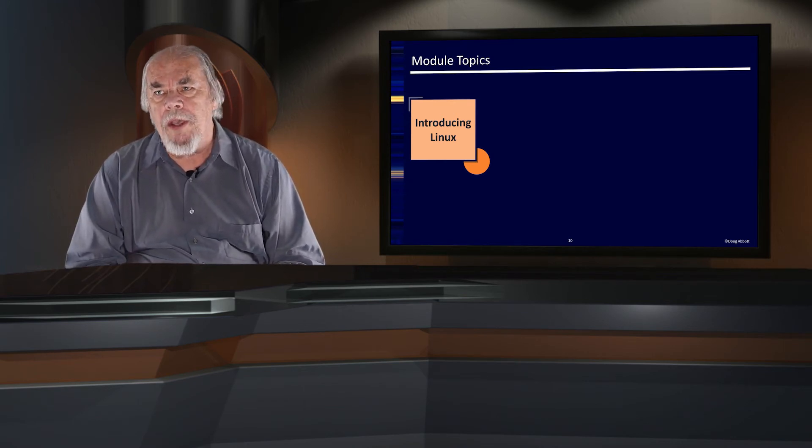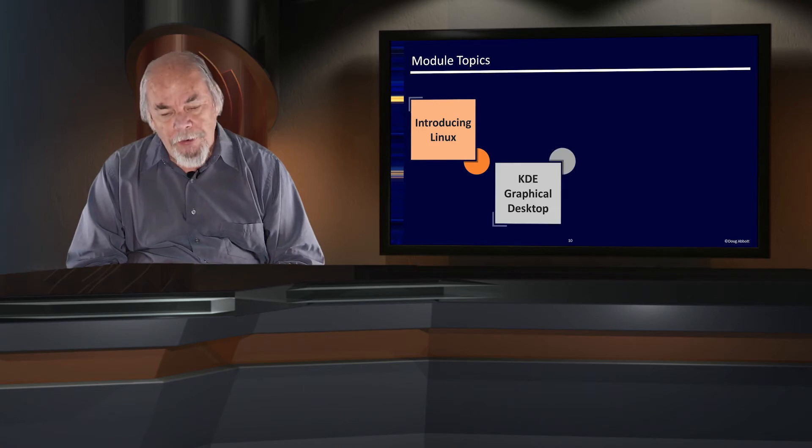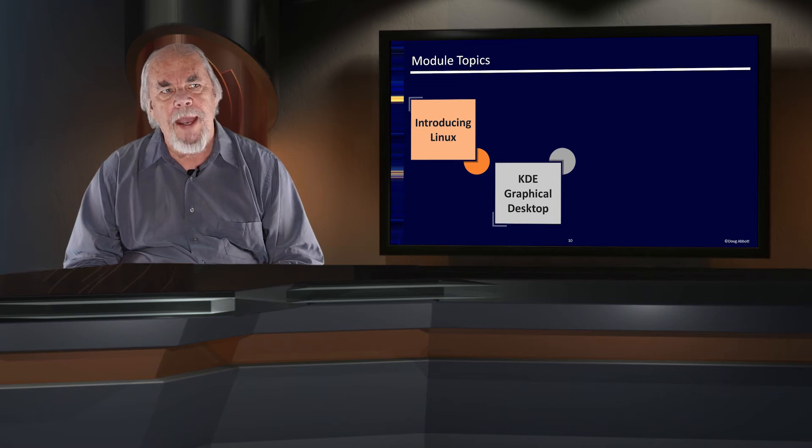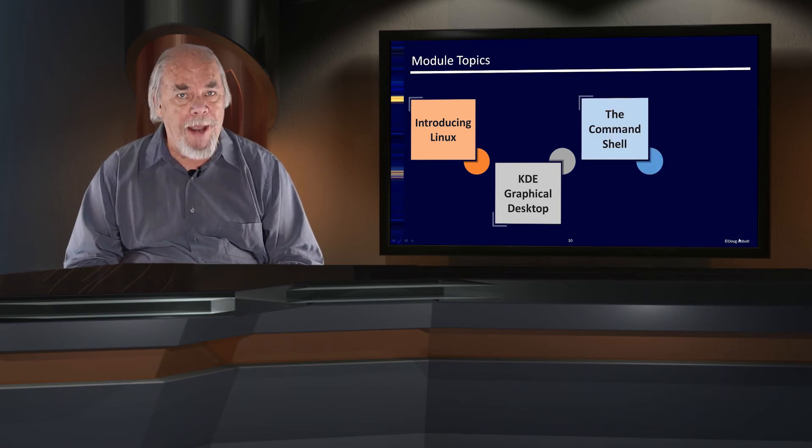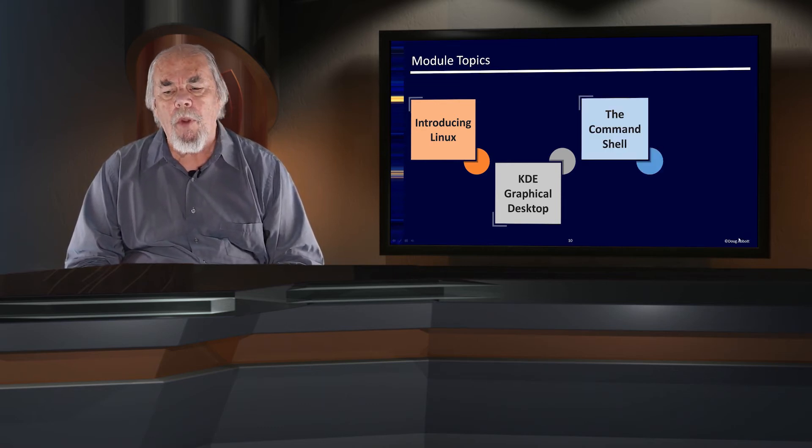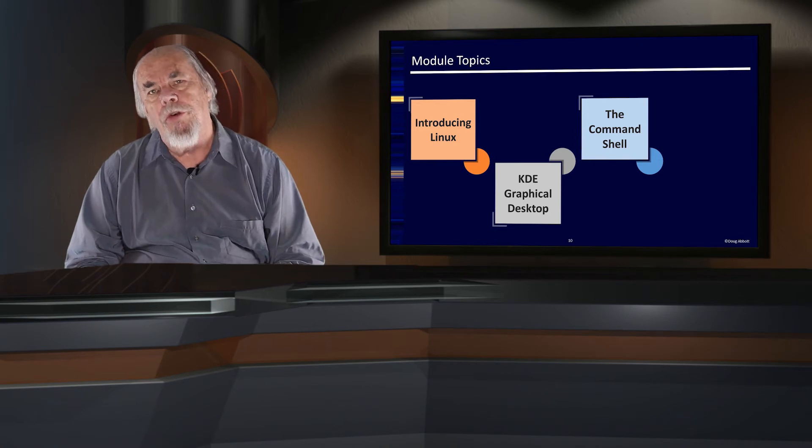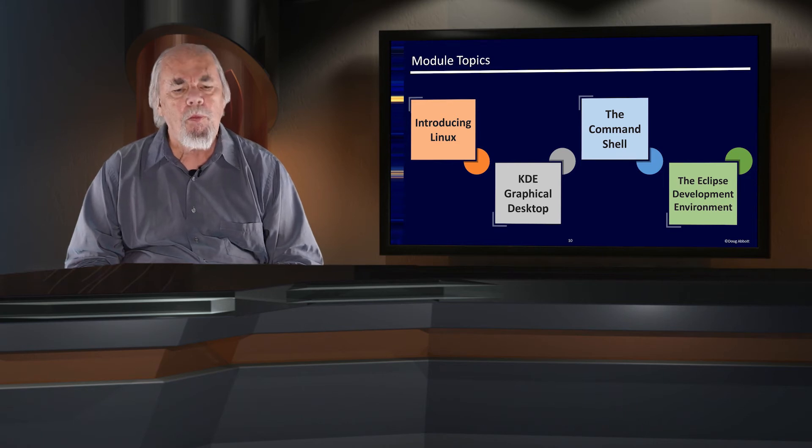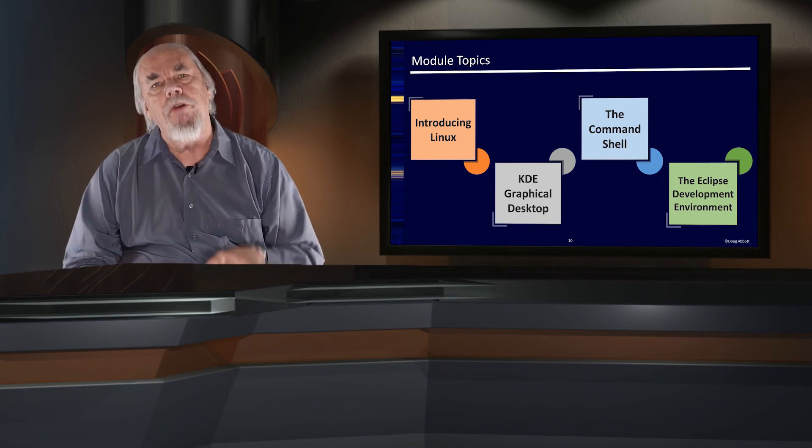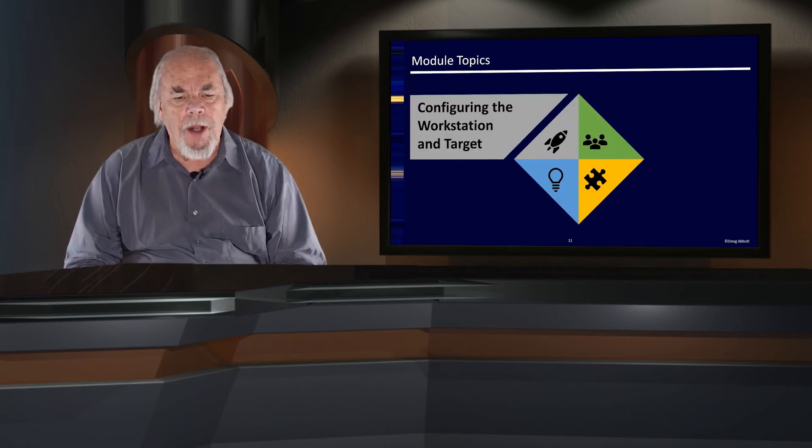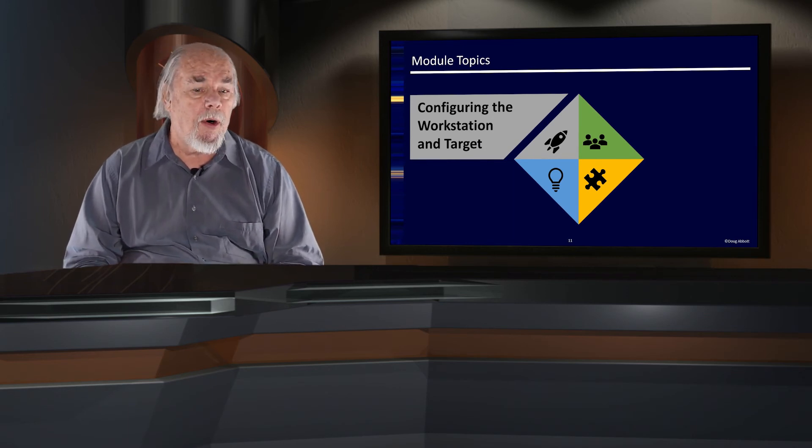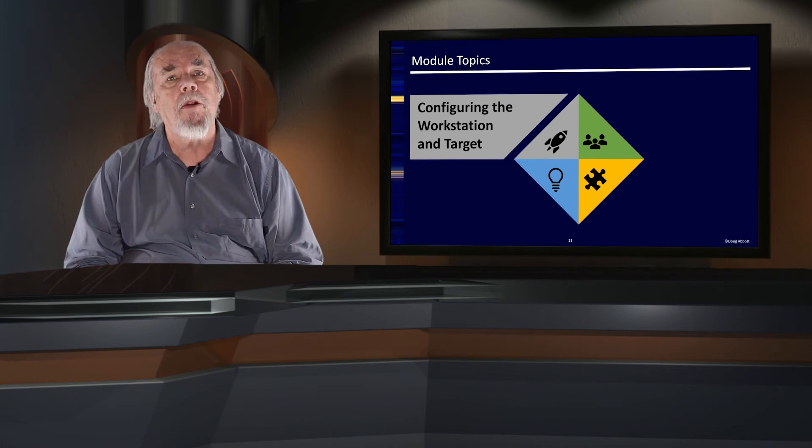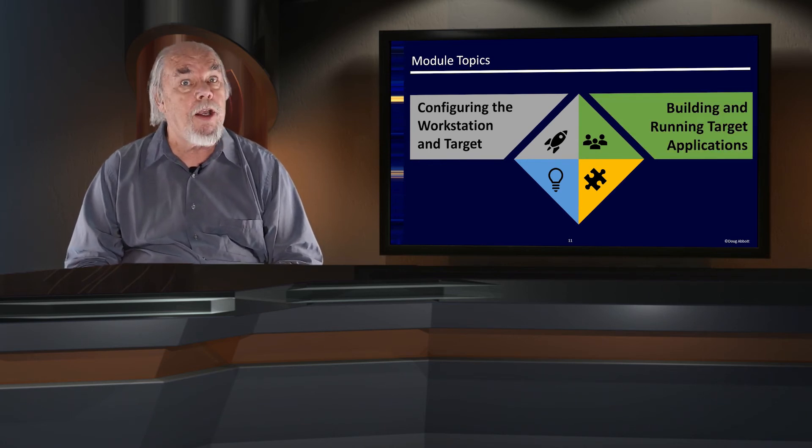Then we'll look at the KDE graphical desktop environment. We'll get into some of the basic features of the Linux command shell. We'll dive into the Eclipse integrated development environment. We will have to do some configuration changes on the workstation, and then we can power up the target board. And at that point, we'll be ready to start building and running target applications using Eclipse.